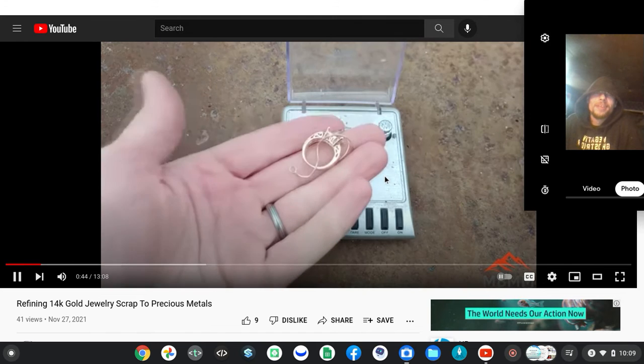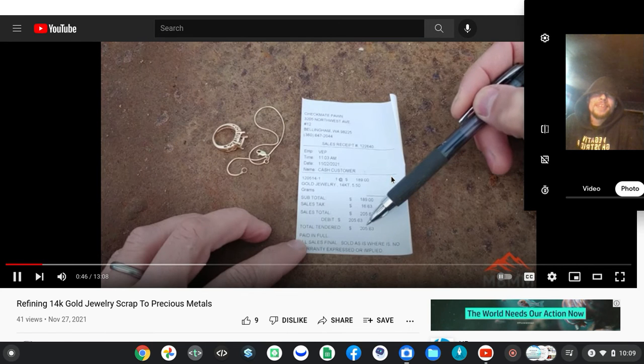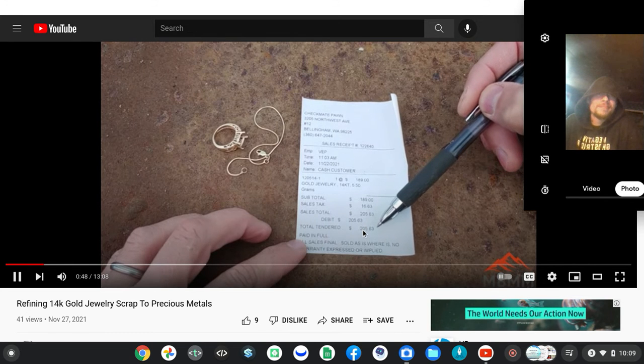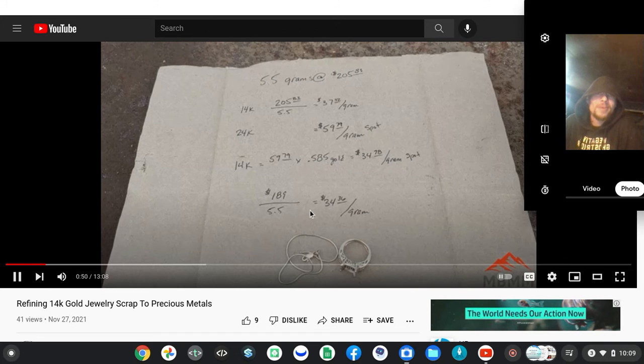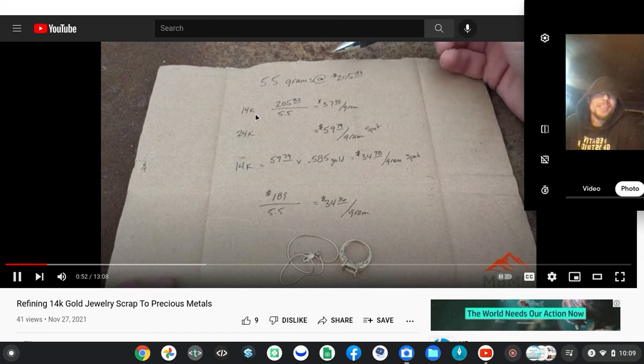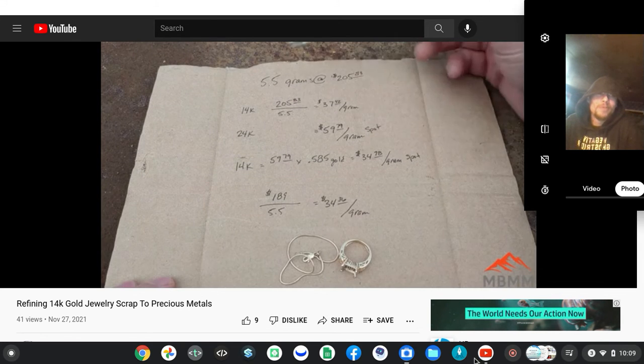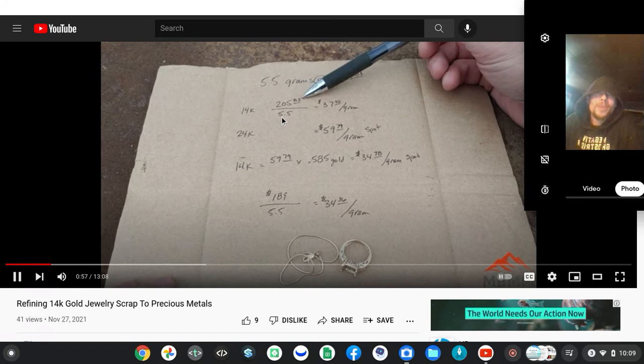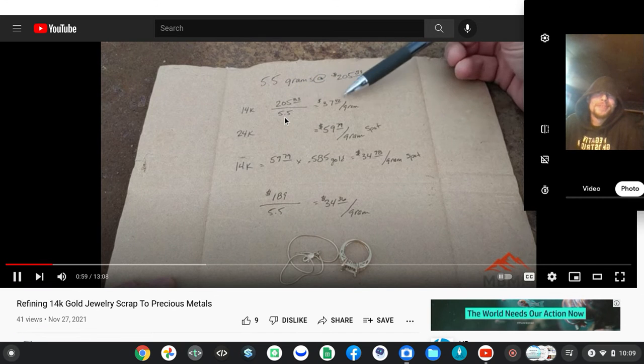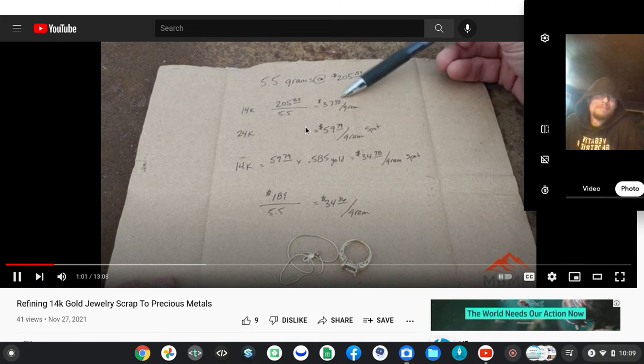Now let's take a look at how much I spent on it. I paid $205.63 after tax. Okay, so this is super important. We've got 5.5 grams, that's what I paid for it. So for 14 karat gold, $205.63 divided by 5.5, that's what I paid per gram.